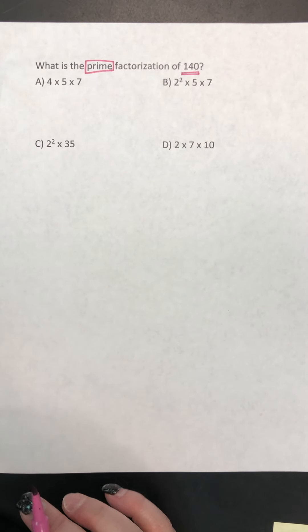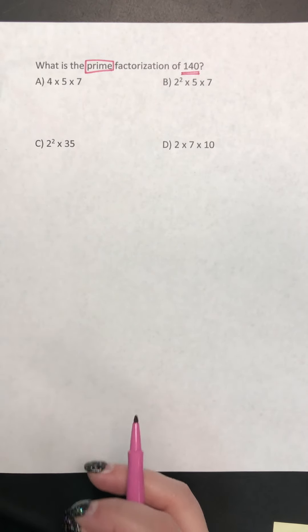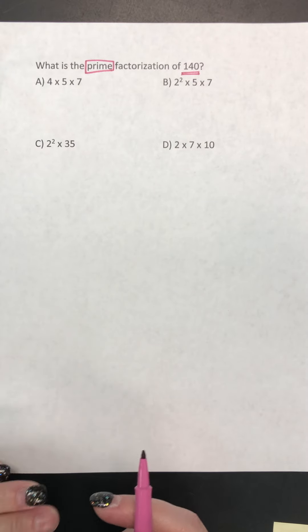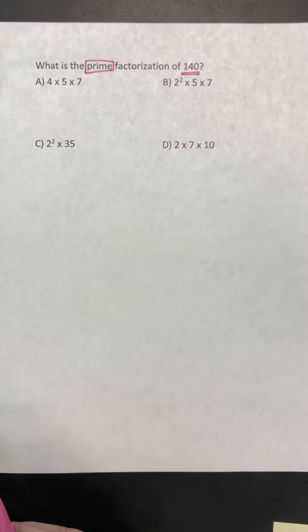Numbers like 3, 1 times 3 is 3. Numbers like 5, 1 times 5 is 5. Those are the only numbers we could multiply to get that number. So those are prime numbers because they only have two factors.